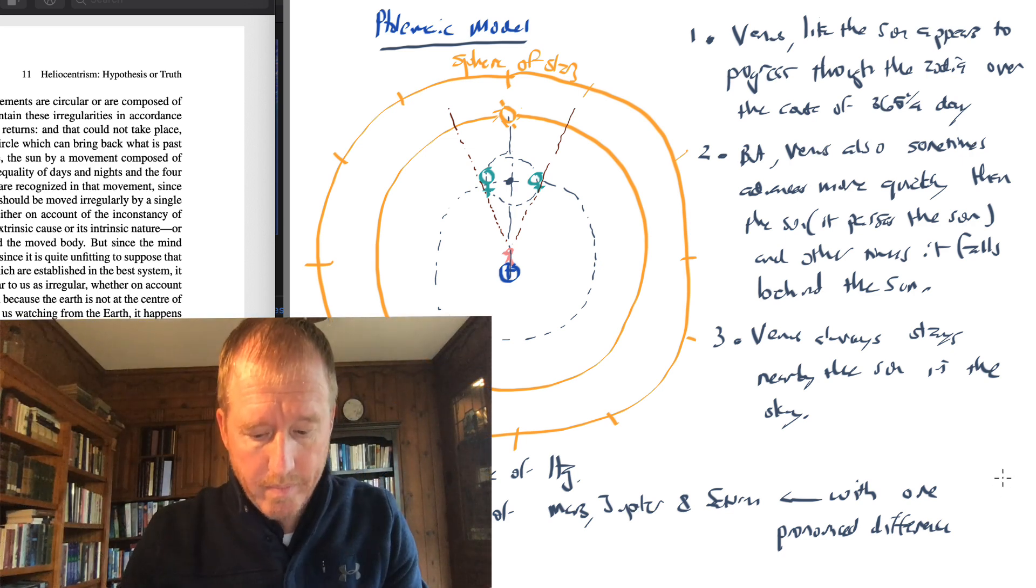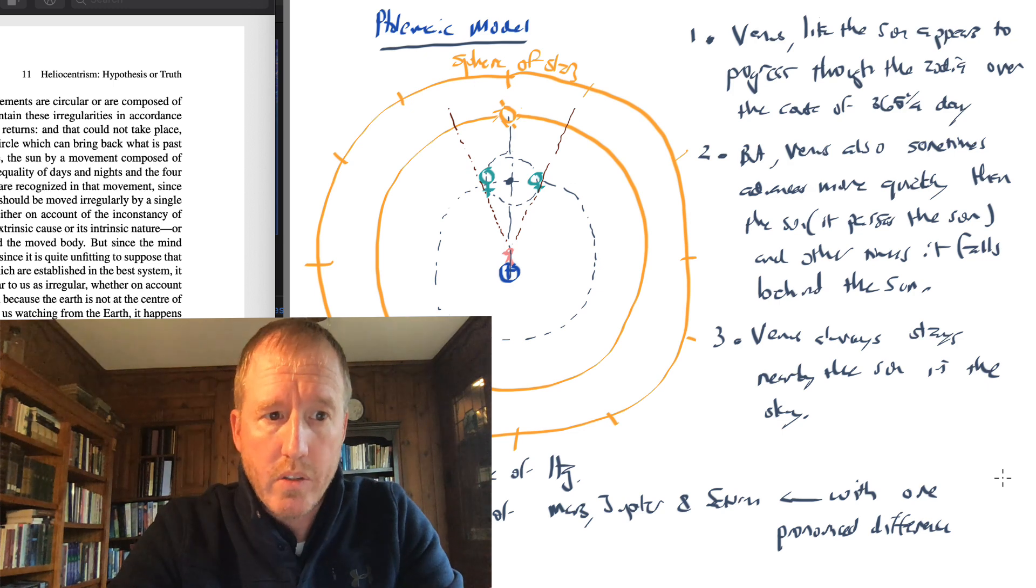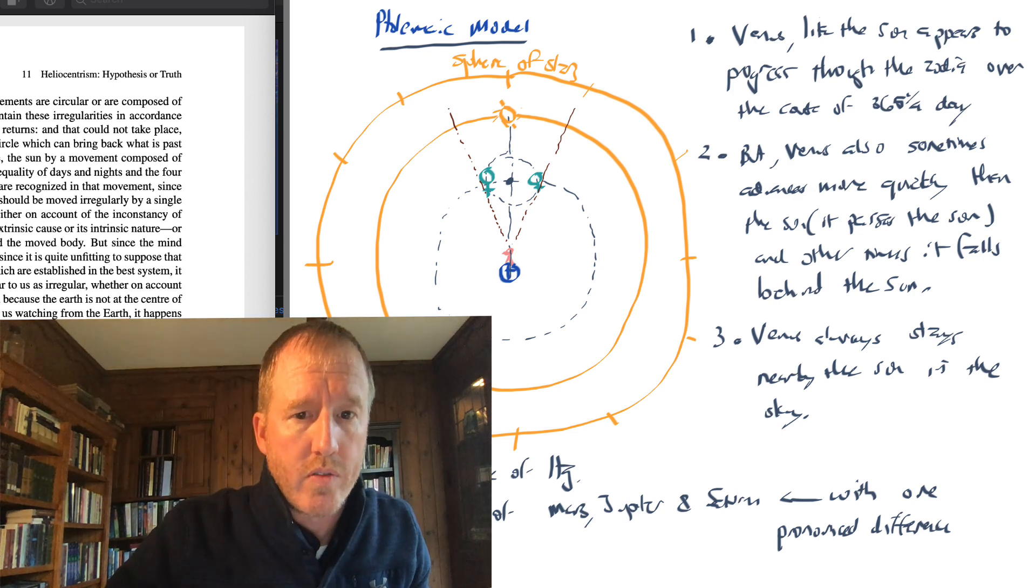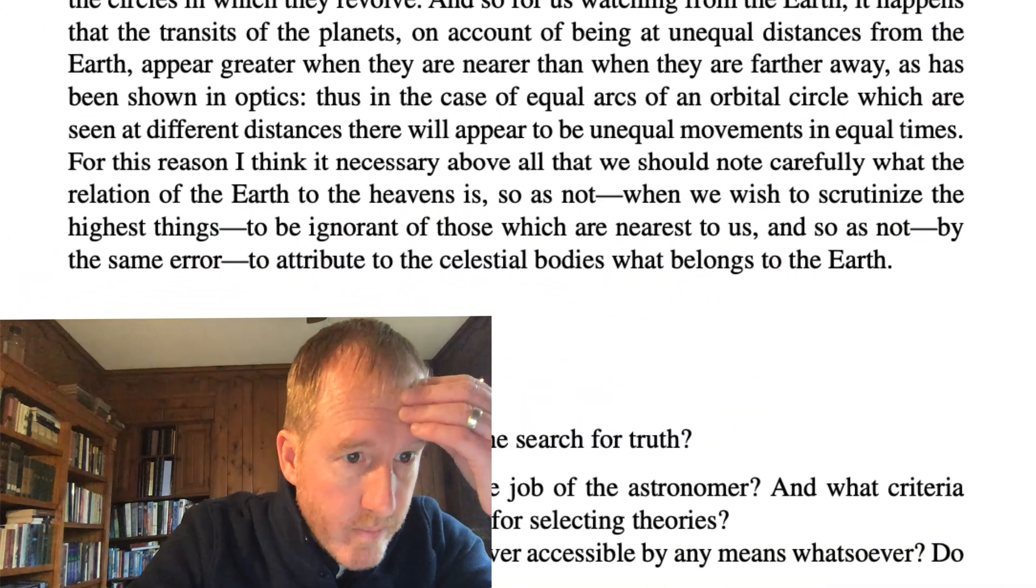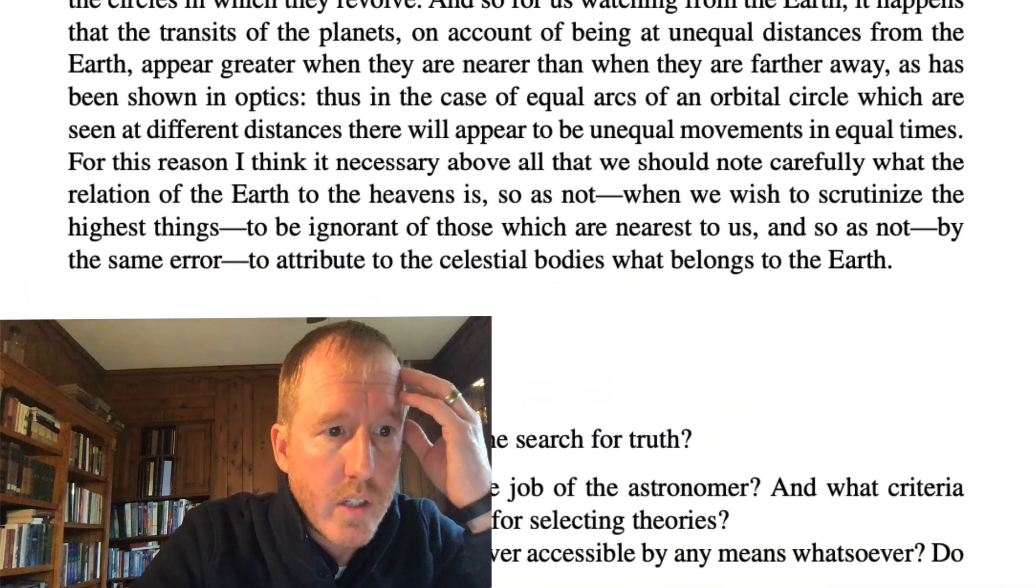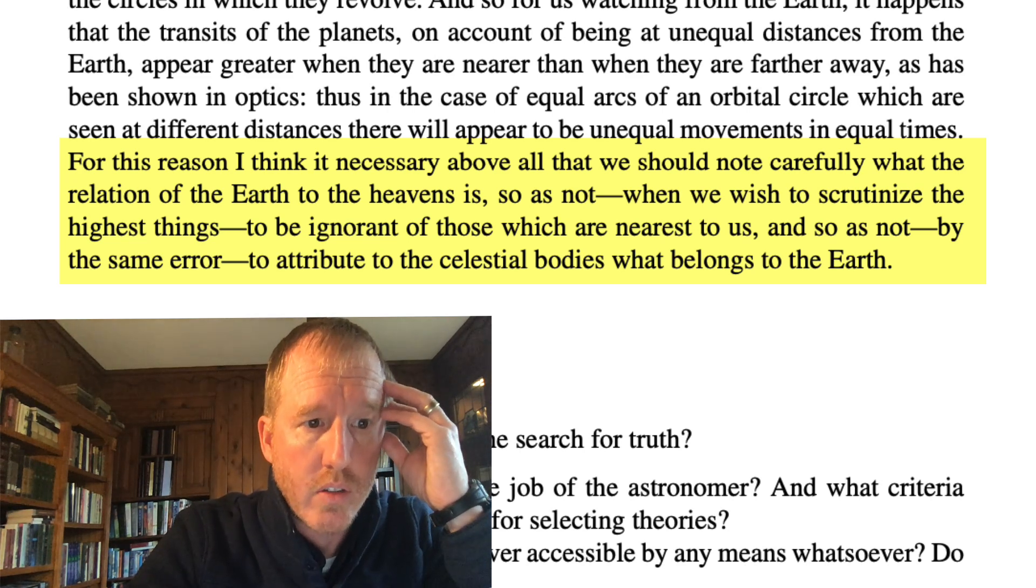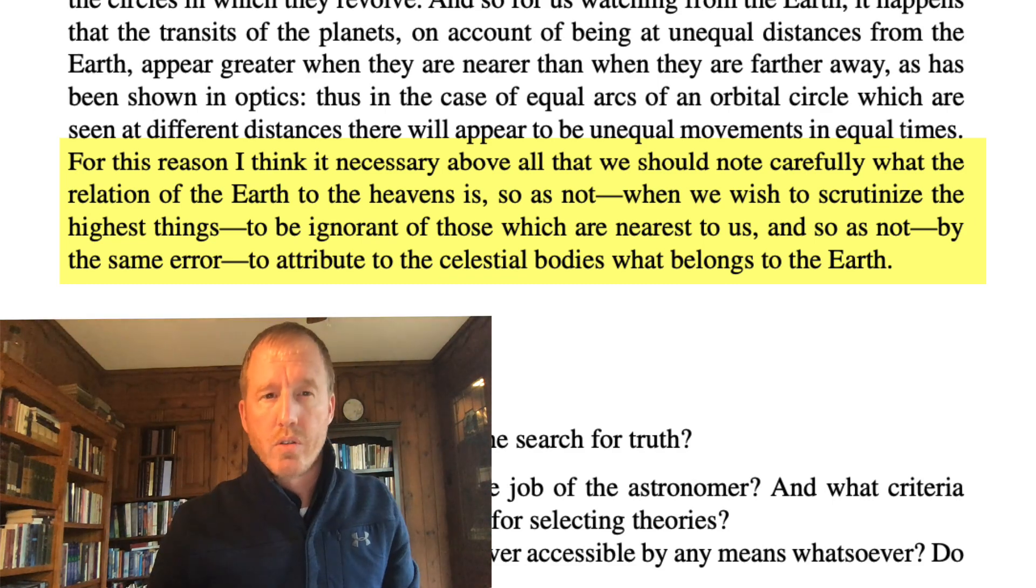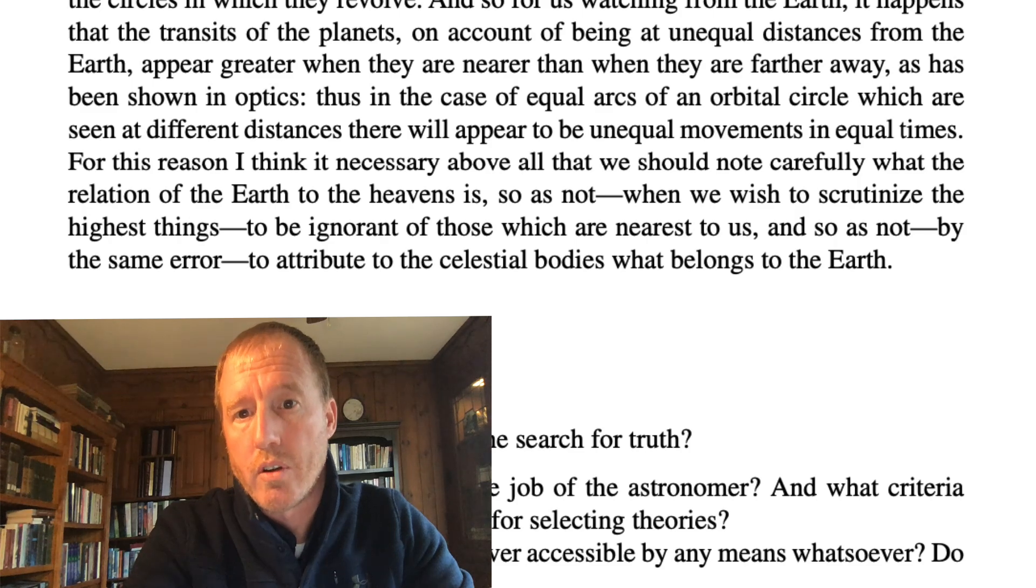But the point that Copernicus is really making at the end of this chapter 11 is one can use these constantly rotating spheres to account for the motion of the sun and the planets. But again, what Copernicus is going to do is he is going to argue that the ordering of the spheres is not as elegant in the Ptolemaic system as the one that he is going to come up with. So if we look at the very bottom of the paragraph on page 140, he's talking about these motions of the sun and the planets. He says, for this reason, I think it necessary above all that we should note carefully what the relation of the earth to the heavens is, so as not, when we wish to scrutinize the highest things, to be ignorant of those which are nearest to us, and so as not, by the same error, to attribute to the celestial bodies what belongs to the earth. So what he's hinting at here, remember this is the very beginning of his book, he's hinting at here that we don't want to suggest that the planets and the sun are exhibiting all these complicated motions, when some of that can be attributed to the actual motion of the earth itself.